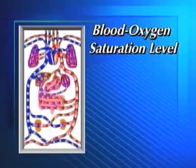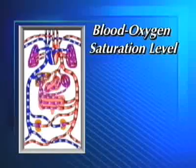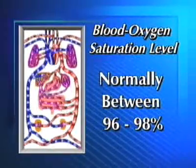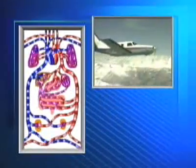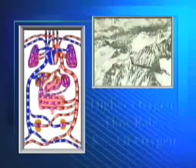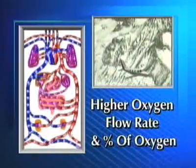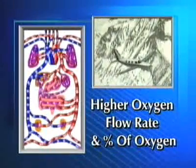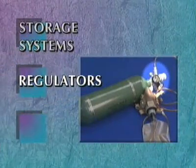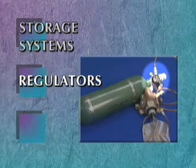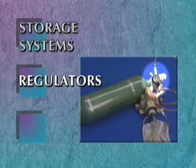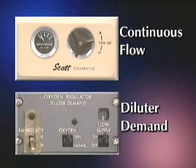The body's blood oxygen saturation level — the capacity of the blood to transport oxygen — is normally between 96 and 98 percent. To maintain this level as you ascend to altitude, your body must receive a correspondingly higher oxygen flow rate and percentage of oxygen. Regulators help in determining the proper oxygen flow, and most types fall into one of two categories: continuous flow or diluter demand.